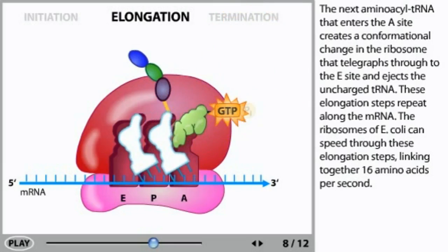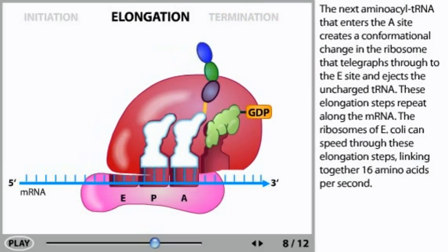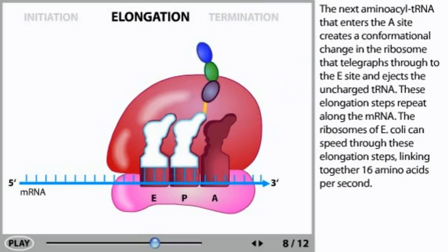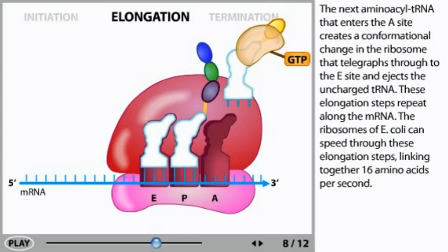These elongation steps repeat along the mRNA. The ribosomes of E. coli can speed through these elongation steps, linking together 16 amino acids per second.